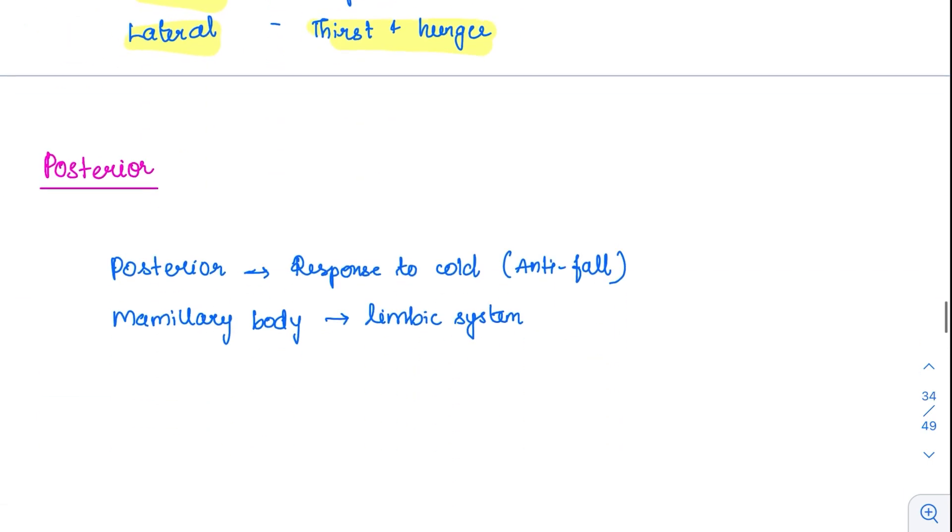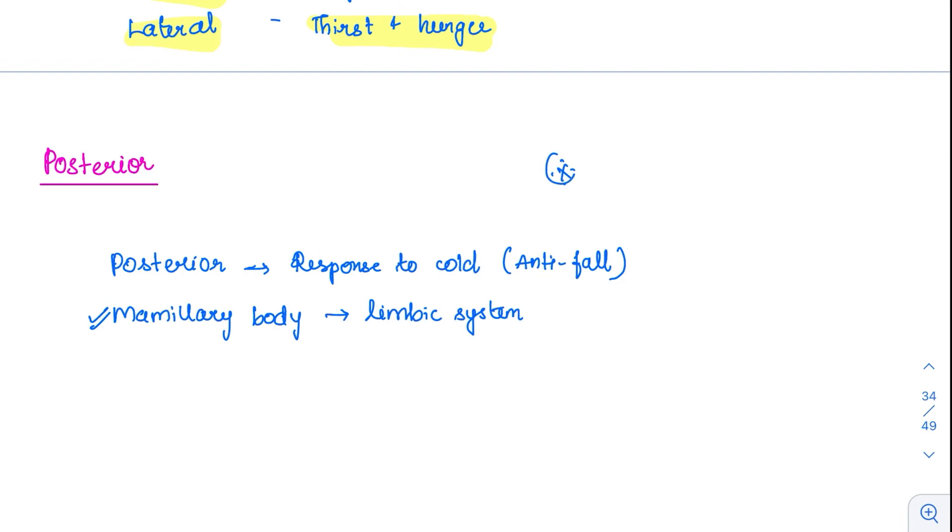Posterior is for cold response, called anti-fall. We have already discussed one more in the limbic system which is the mammillary body. The mammothalamic tract is formed with the help of this mammillary body, from here it goes to the anterior nucleus of thalamus. This is also located in the posterior part of hypothalamus.